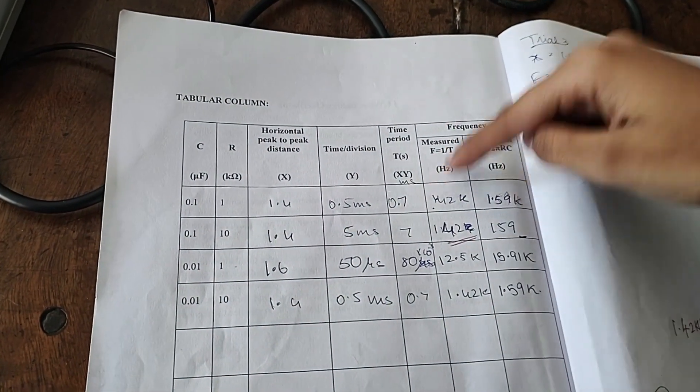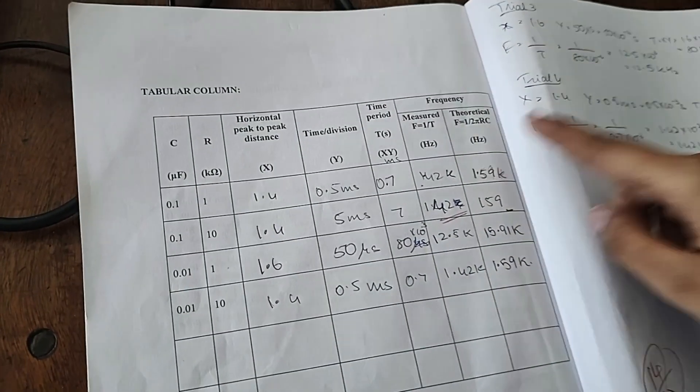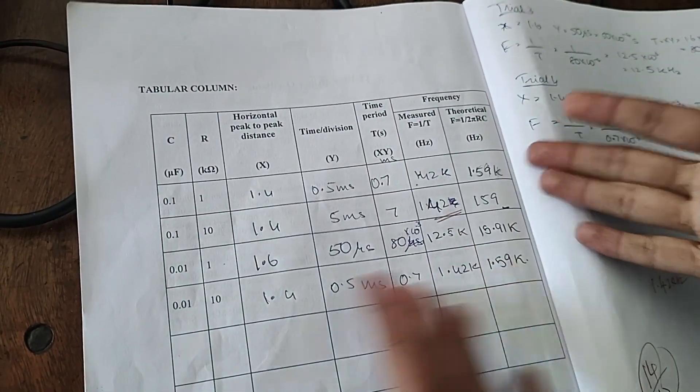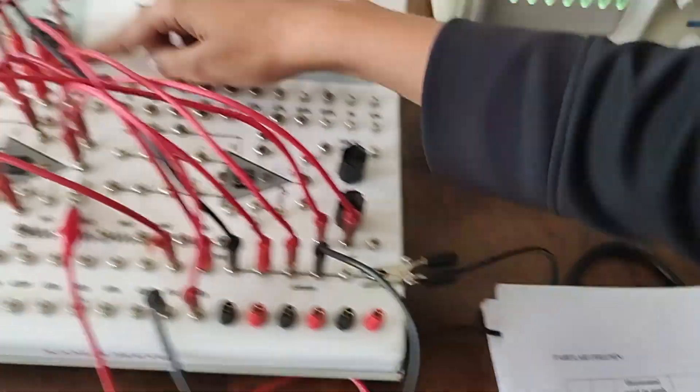You'll divide one by whatever value you get to get the frequency. Then you calculate theoretical frequency using this formula that we had written before: 1 by 2π·R·C. They need to match. You do the same thing for different combinations. Say next you'll take R is 10k, so you just shift the last two 1k's all the way to 10k.